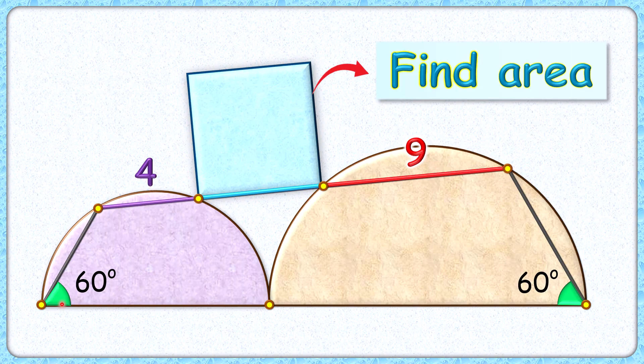4 and 9 centimeters each. These angles are given as 60 degrees each. The exciting part is, with this limited data, we have to find the area of this square.